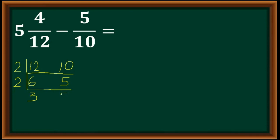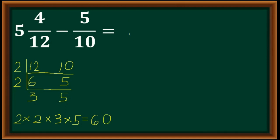If a number can't be divided evenly, we bring it down — so we bring down 5. Then we multiply: 2 times 2 is 4, times 3 is 12, times 5 is 60. We now have an LCD of 60.